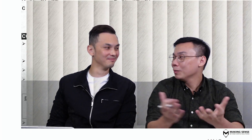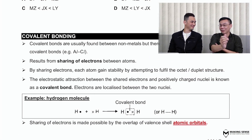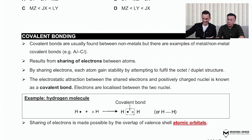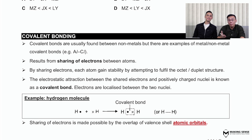But you cannot bring dogs to exam, so I'm going to let you take over and explain to the class how this thing works. So in terms of a covalent bond, the covalent bond is usually formed as a result of sharing of electrons.